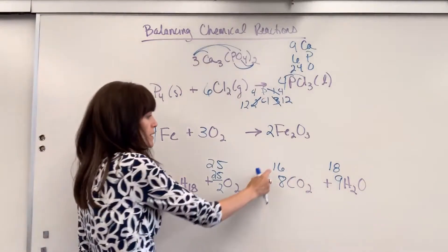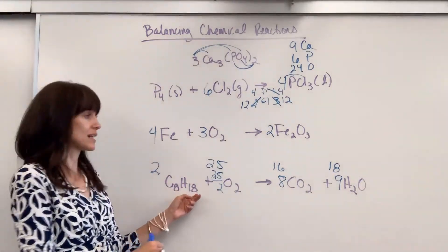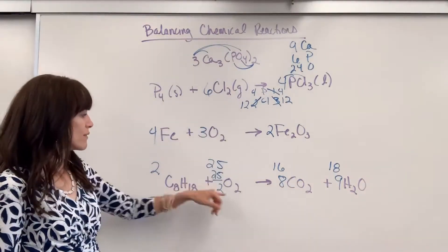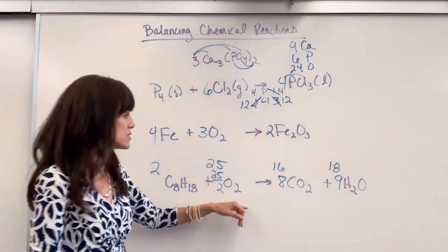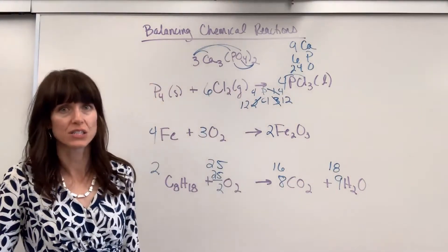We've got 16 carbon, 16 carbon. Two times 18, 36 hydrogen. 18 times two, 36 hydrogen. 25 times two, 50 oxygen. 16 times two is 32 plus 18, 50 oxygen.